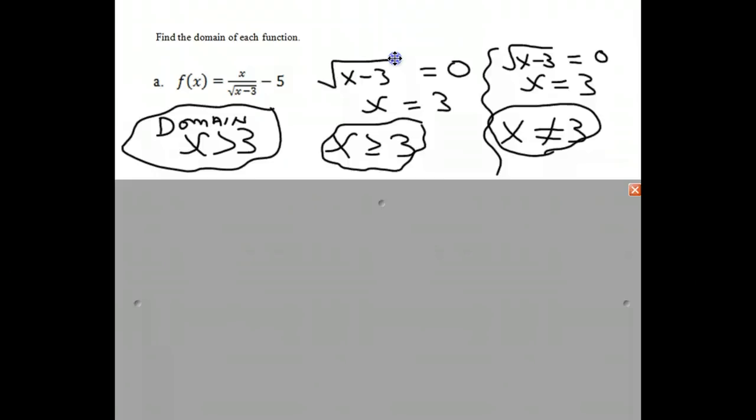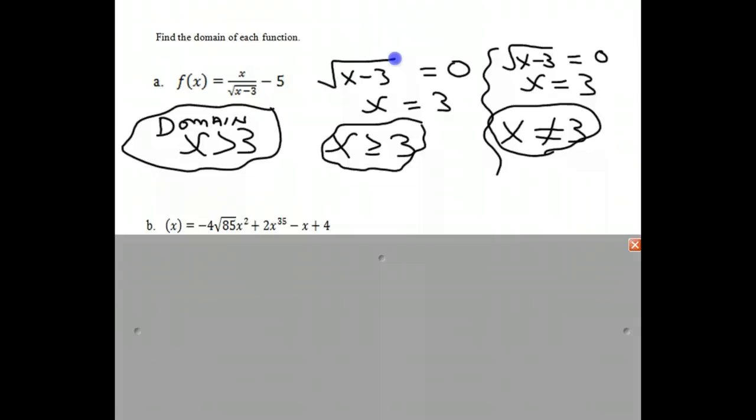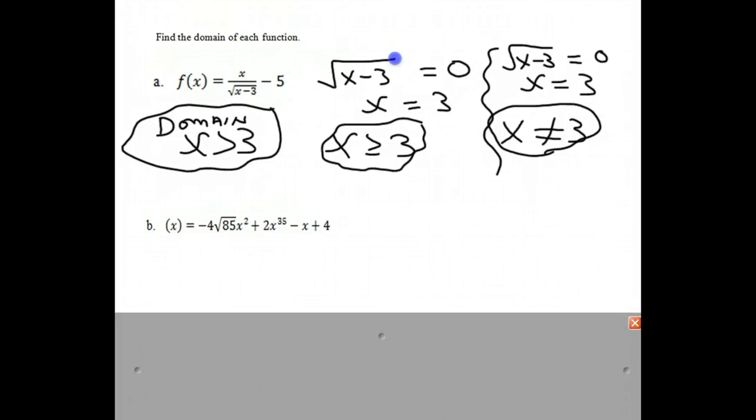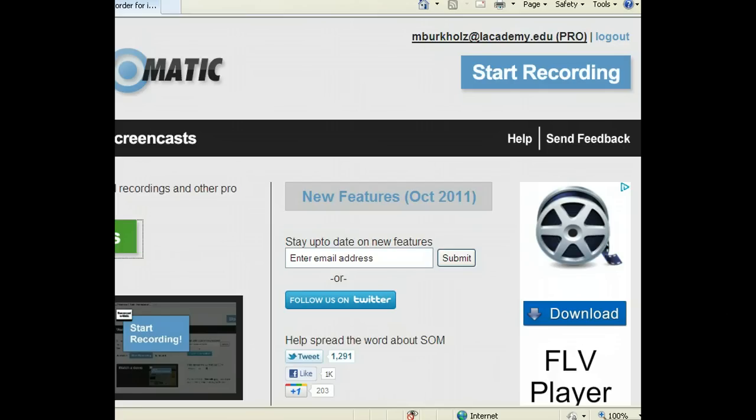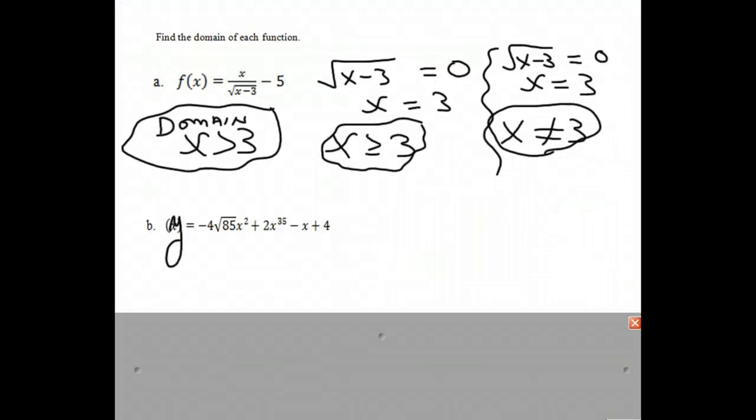Going to our second example, we have another polynomial. And in this polynomial, we notice that it says x equals... this should be y equals, I'm not sure why that's there. And we look at this and we say, what is it that we cannot have in our domain?